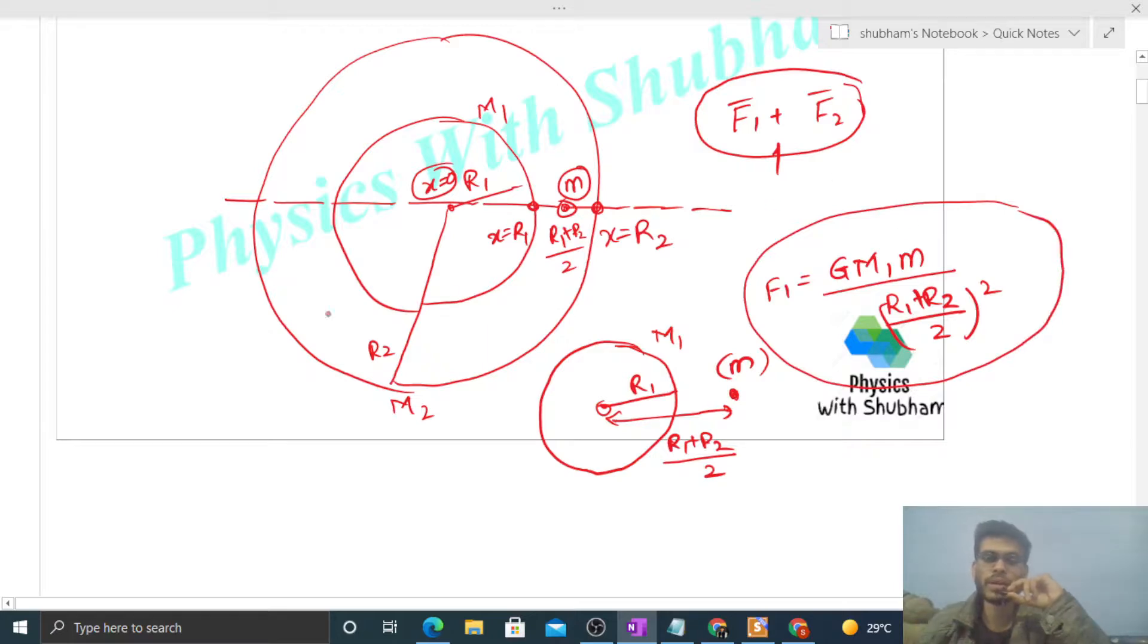Now let's talk about F2. We have this shell of radius R2 and mass M2, and inside it there's a particle of mass small m.